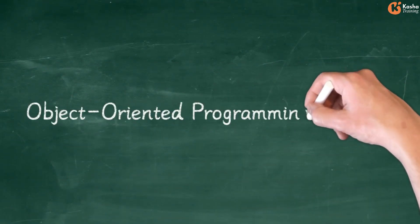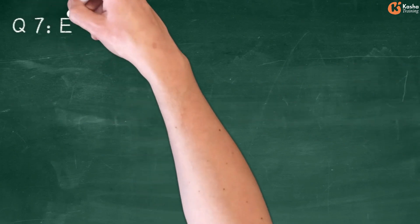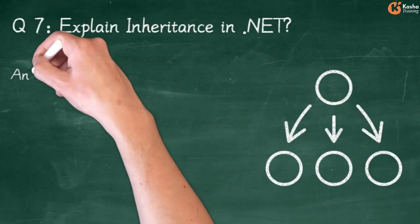Object Oriented Programming in .NET. Question 7: Explain Inheritance in .NET.